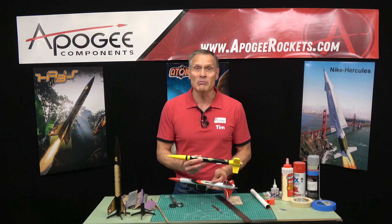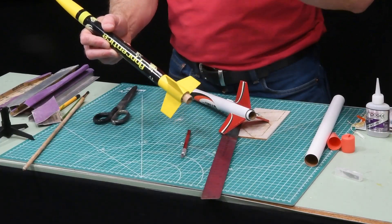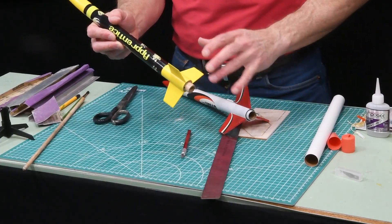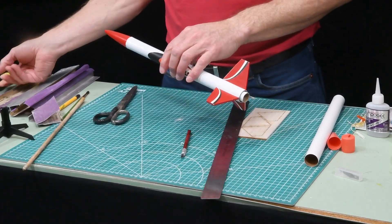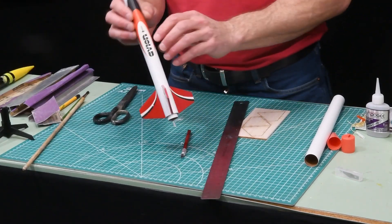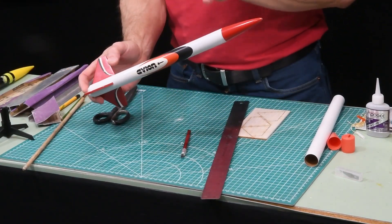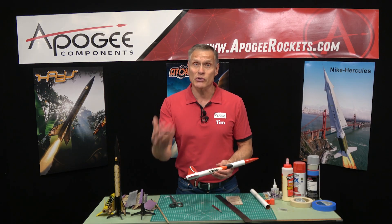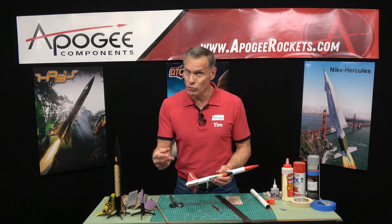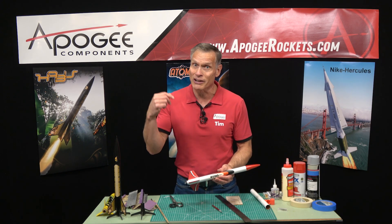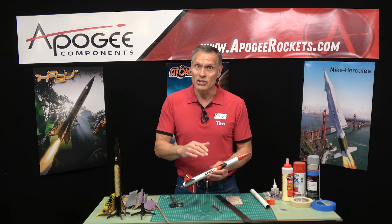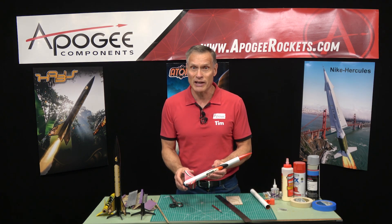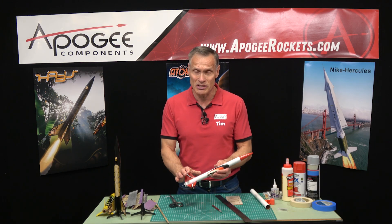We also have something like the Haboo which is also a skill level one rocket. Now skill level one can mean building a rocket like the Apprentice which has plastic fins which is like the easiest rocket to build. But we like to start people out with something like the Avion because the skills you learn building this one are readily transferable to the skill level two, three, four and five level rockets.